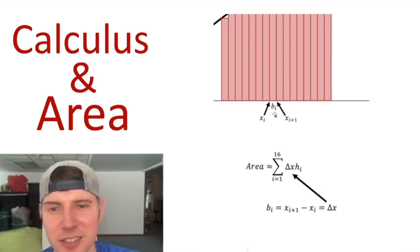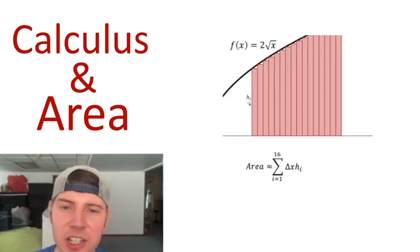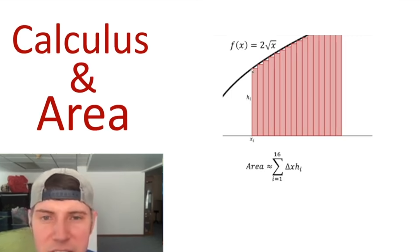Let's change this B_I to delta X. So now let's talk about the height. This height, H_I, since this stops when it hits our function, the height is actually defined by the function value right there. So we would say F of X_I. So we can change our H_I into F of X_I.